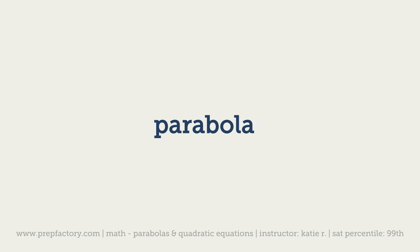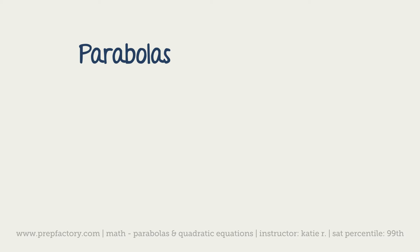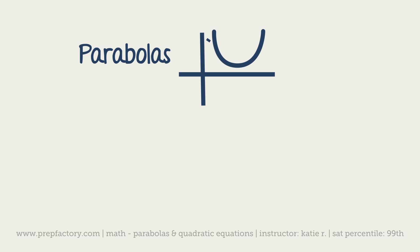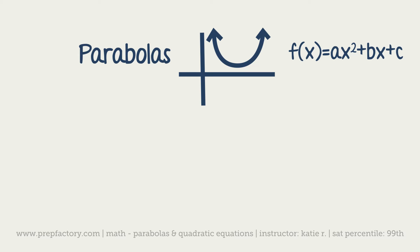Now let's move on to parabolas and the quadratic equations that create them. A parabola looks something like this — they can go up or down, they can be skinnier or fatter depending on the numbers. Basically, the equation is going to be something along the lines of f(x) or y equals ax squared.